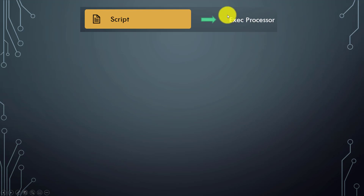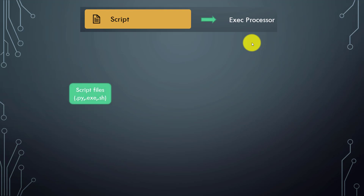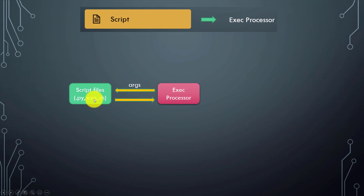For scripted input, the main component is the exec processor. Scripted input works like this: we create a script file — it could be a Python file, an exe file, or a shell script. The exec processor calls that script with some arguments, the script runs and sends the data back to the exec processor.